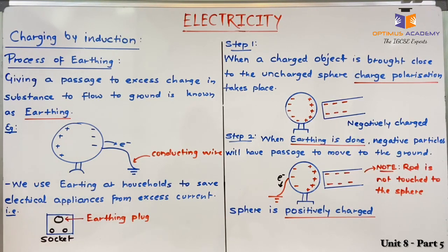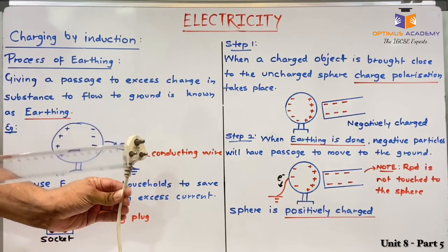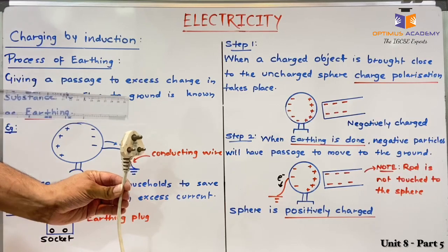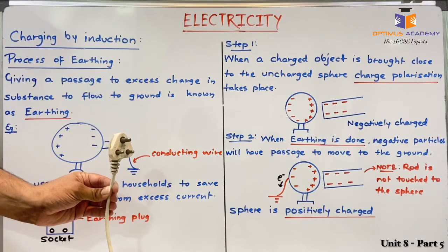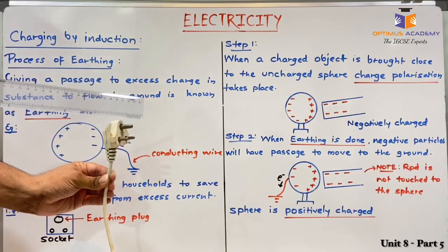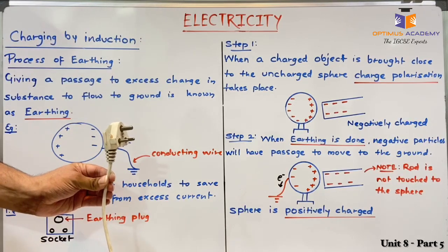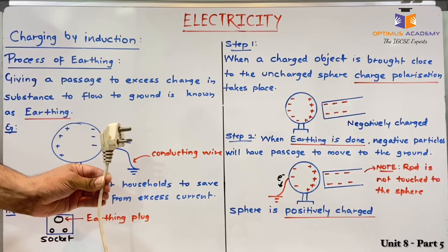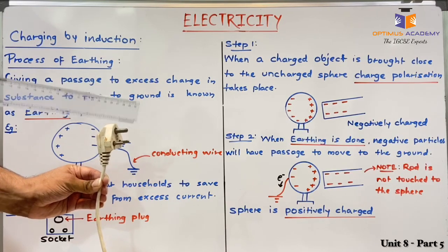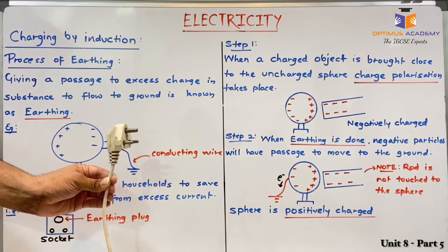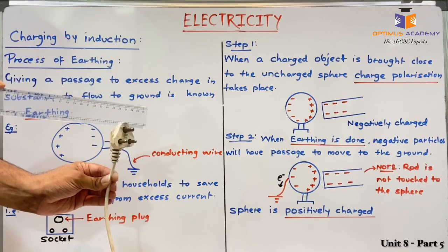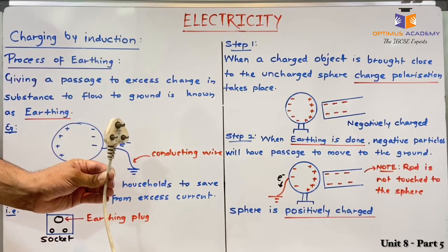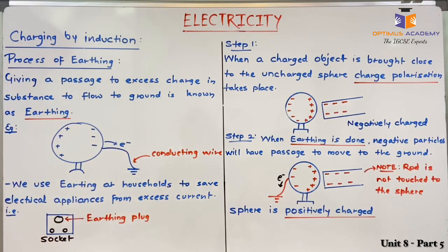To avoid damage, we connect devices with earthing. For example, in a three-pin plug, there are three connections — two at the bottom and one at the top. The top connection acts as the earthing connection. When plugged in, it connects to the supply first, and if there is any excess current flowing through the circuit, it takes that excess charge to the ground, saving the device. The two bottom connections are live and neutral.